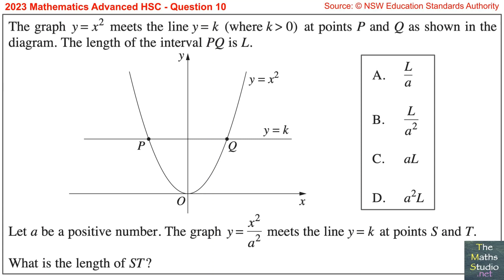Question 10. The graph y equals x squared meets the line y equals k, where k is greater than 0, at points P and Q as shown in the diagram. The length of the interval PQ is L. Let a be a positive number. The graph y equals x squared over a squared meets the line y equals k at points S and T. What is the length of ST?